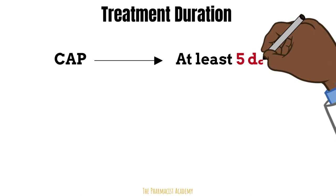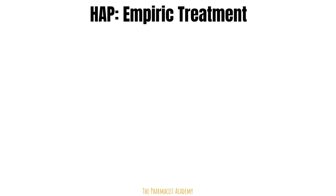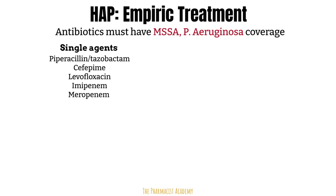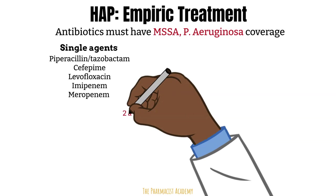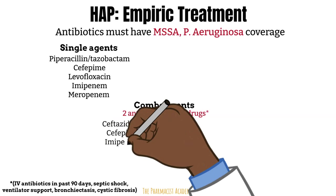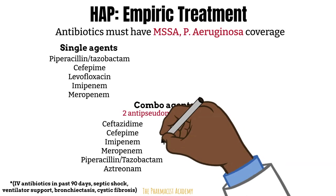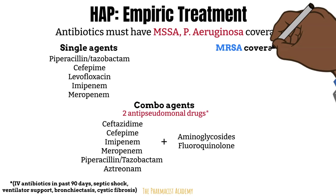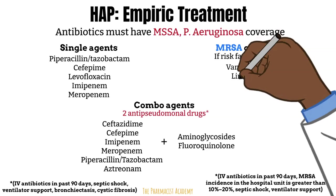For the empiric treatment of HAP, regimens should include antibiotics with activity against staphylococcus, pseudomonas, and other gram-negative organisms. Single agent options include piperacillin-tazobactam, cefepime, levofloxacin, imipenem, and meropenem. Combination therapy is also an option, using two drugs that both cover pseudomonas for patients meeting certain criteria: one anti-pseudomonal beta-lactam — such as ceftazidime, cefepime, imipenem, meropenem, piperacillin-tazobactam, or aztreonam — plus either an aminoglycoside or a fluoroquinolone. MRSA coverage with vancomycin or linezolid is required in patients with specific risk factors. HAP is treated for seven days.